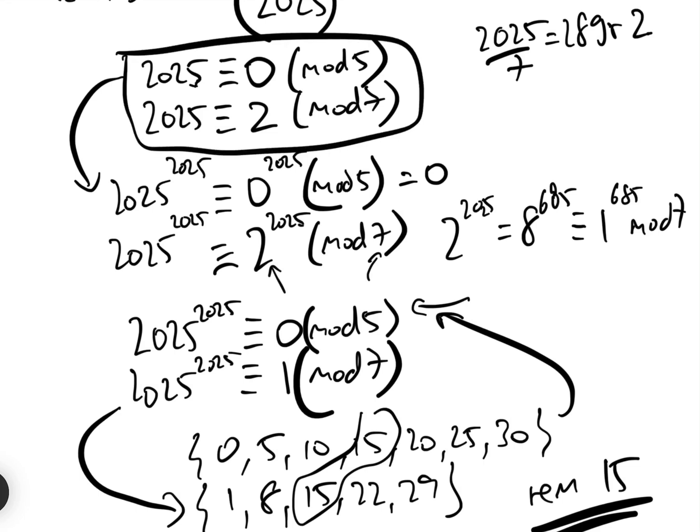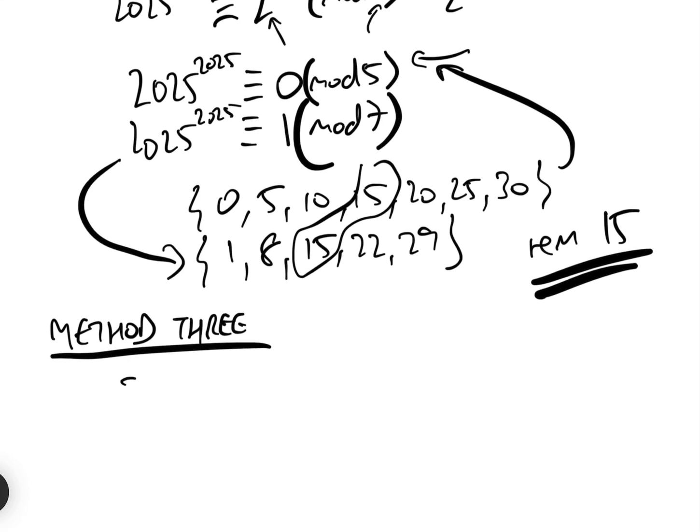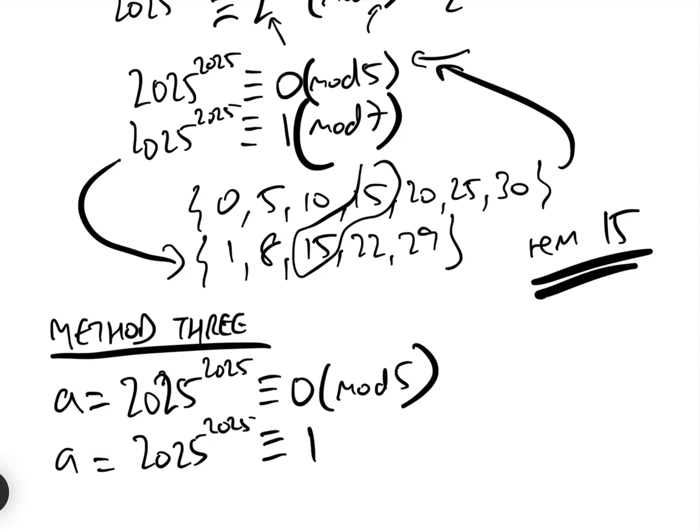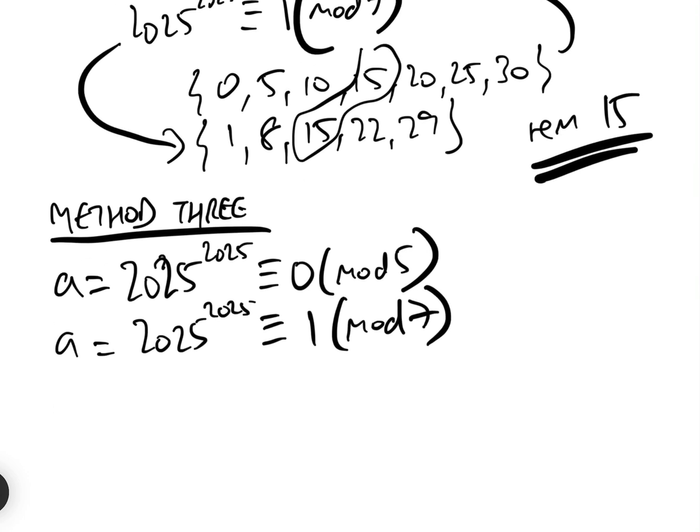Let's just take these two bits here. So we know that 2025 to the 2025 is equal to 0 mod 5, and let the number be A, it doesn't matter what it is anyway. And so A also equals 2025 to the 2025, which equals 1 mod 7. We've already worked that out above. So basically from this one here, we know that the number A is equal to 7 times some integer, let's call it L, add 1.